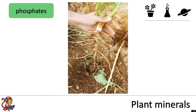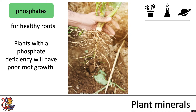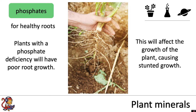Another important group of minerals are phosphates. These are needed for healthy roots. Plants with a phosphate deficiency will have poor root growth, and this will affect the growth of the plant, again causing stunted growth.